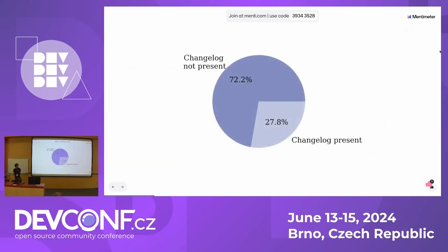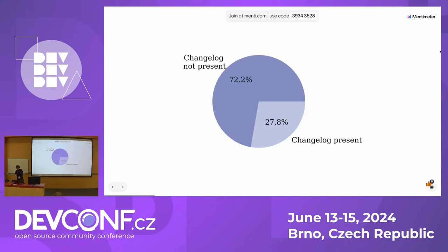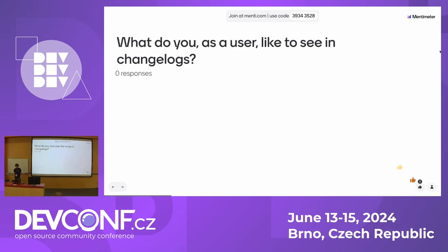Here we can see the first chart from my master thesis, and unfortunately in a lot of repositories I was collecting data from, the changelog was actually not present — or at least not from the usual names like changelog, news, release notes, etc. So we have a next question, hopefully a little bit more challenging: what do you, as a user, like to see in changelogs?